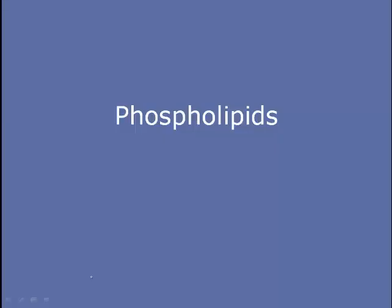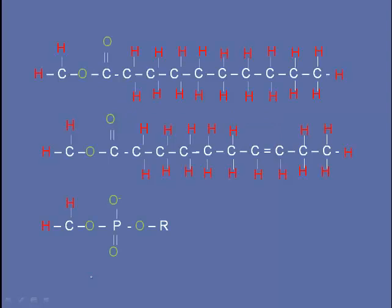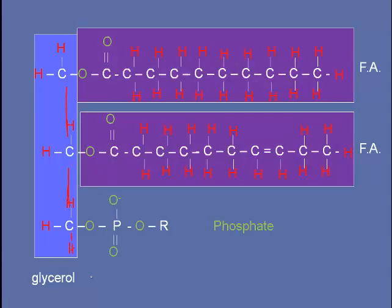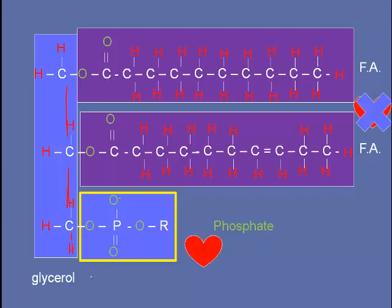Another type of lipid is phospholipids. Phospholipids at first glance look a lot like a triglyceride or fat, but looking more closely, you'll see differences. You have glycerol and two fatty acids, but instead of a third fatty acid, there is a phosphate group. Phosphate groups and glycerol are hydrophilic, while the fatty acids are hydrophobic. So what happens when you put a phospholipid into water is very interesting — the phospholipid head (phosphate and glycerol) tends to orient toward the water, while the fatty acid tails try to stay away from it.